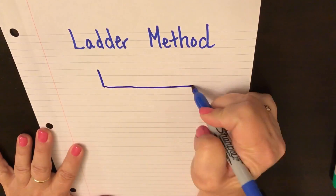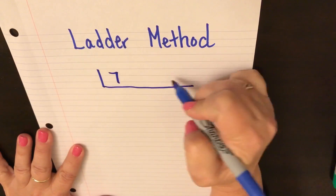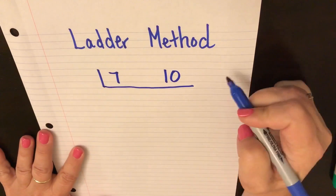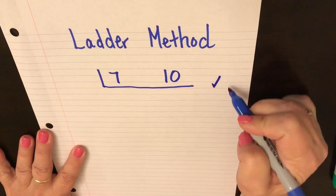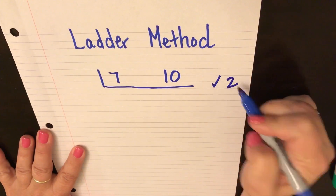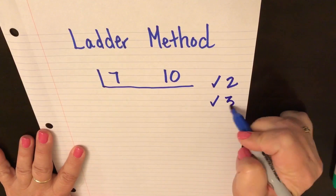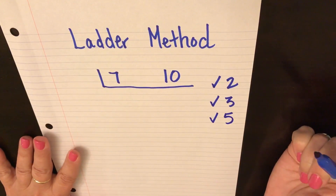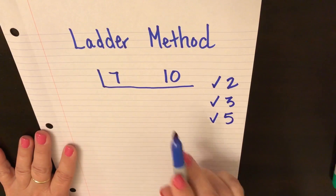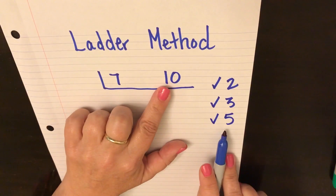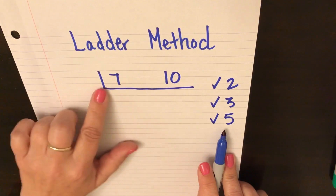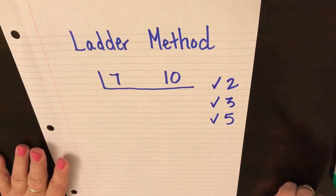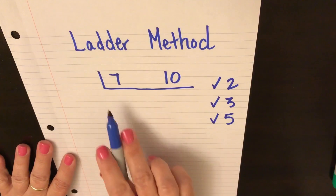A quick way to find the least common multiple of two numbers is to use the ladder method. Just place both numbers inside the ladder and then decide which number you can divide both numbers by. We can always check with 2, 3, or 5 — these are prime numbers. 10 can be divided by 5, but 7 can't, so that won't work.